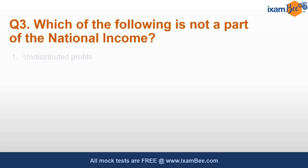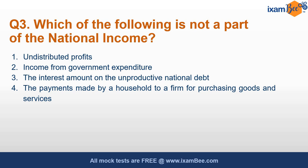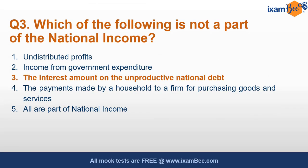Which of the following is not a part of national income — undistributed profits, income from government expenditure, the interest amount on the unproductive national debt, or payments made by a household to a firm for purchasing goods and services? The correct answer is the interest amount on the unproductive national debt. Undistributed profits are part of national income as income earned by factors of production. Income from government expenditure is part of national income under government final consumption expenditure. Payments made by a household to a firm are part of private consumption expenditure. Whereas interest on unproductive national debt is not accounted for in national income.